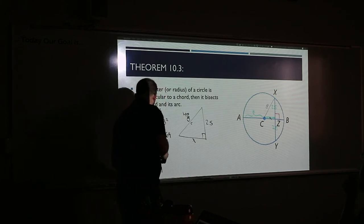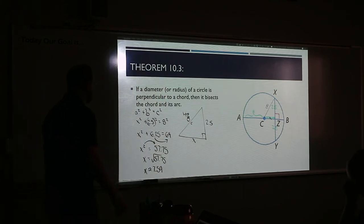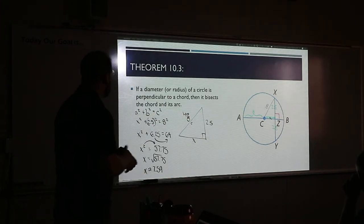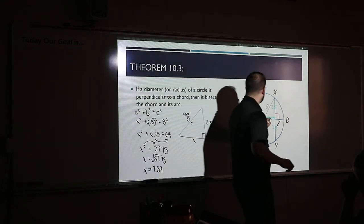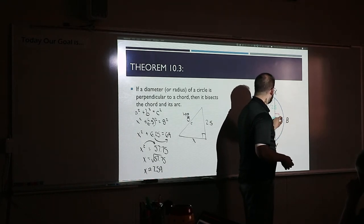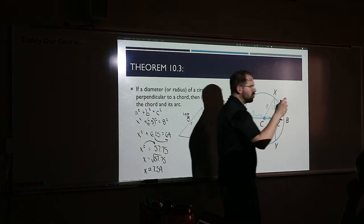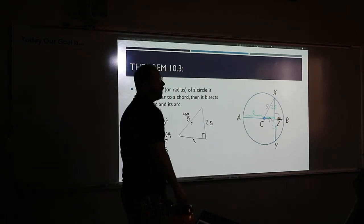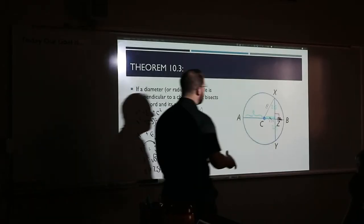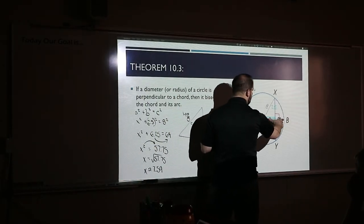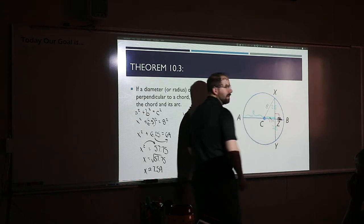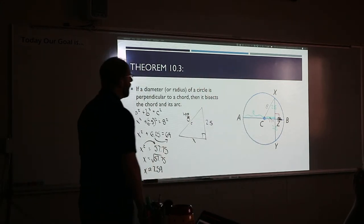That makes sense — 7 times 7 is 49, 8 times 8 is 64, so it had to be some weird decimal between there to make 57.75. That number is CZ — 7.59. This picture is not drawn to scale; that means this chunk right here is super small, about 0.41, because the whole radius has to be 8, so 7.59 plus 0.41 equals 8. So I don't try to read into the picture's proportions.